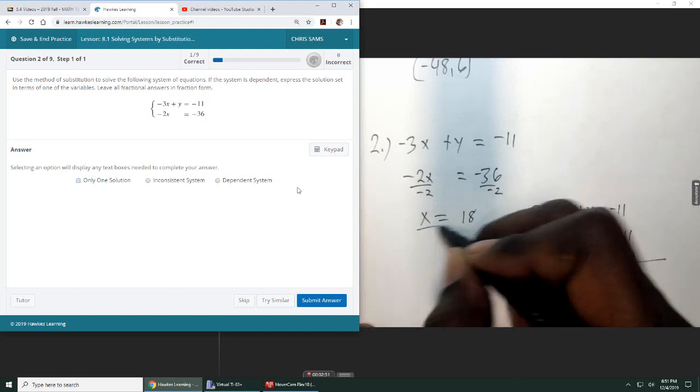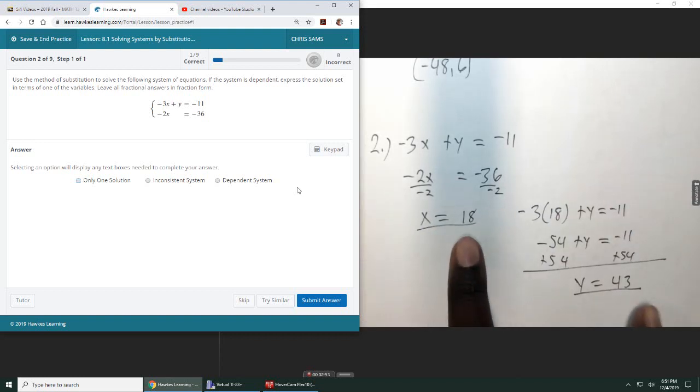And this will give me y equals 43 positive. Okay, so we've got a y value, we have an x value, so our ordered pair will be 18 and 43. So we've got one solution, 18 and 43.